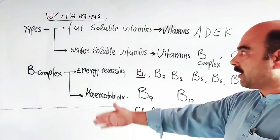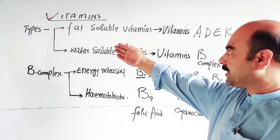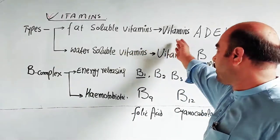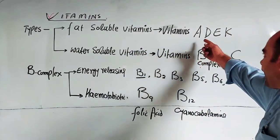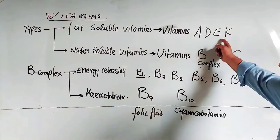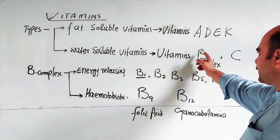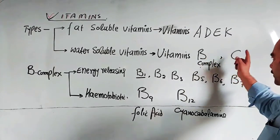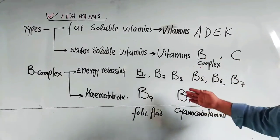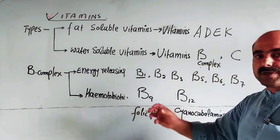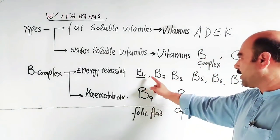The classification or types of vitamins: fat-soluble vitamins include A, D, E, and K. Water-soluble vitamins include Vitamin C and the B complex group.